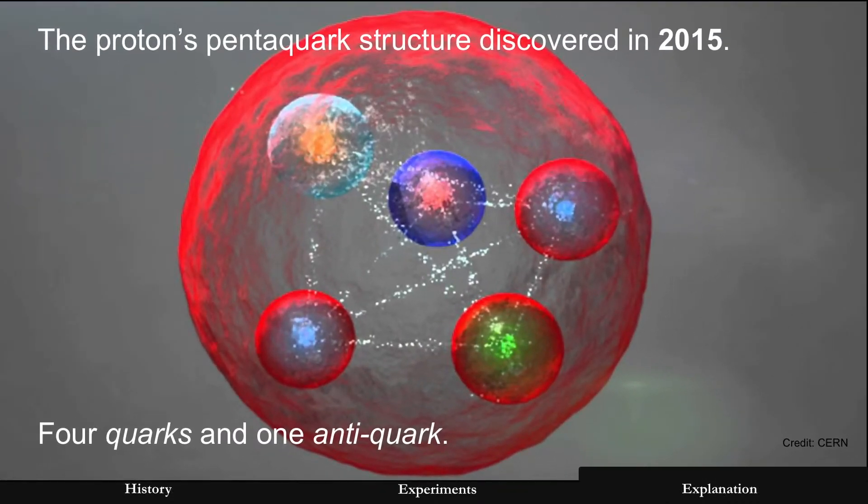Which one? Well, the proton's pentaquark structure that was discovered in 2015. And in that discovery, proton was found to be four quarks and one antiquark. But this is only at really high energy levels for proton collisions.